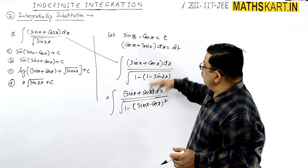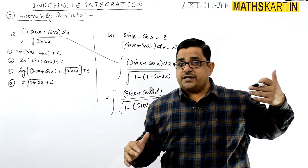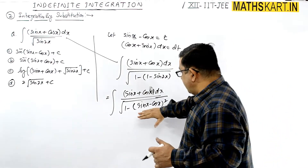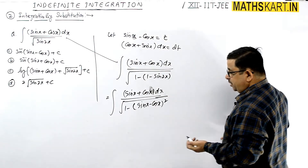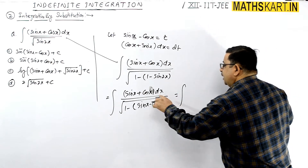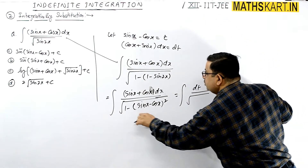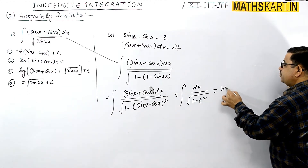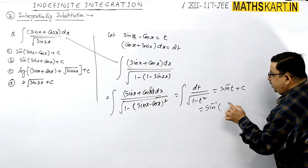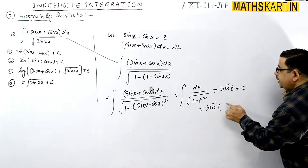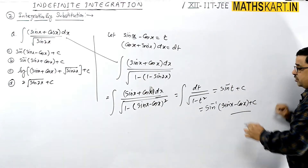We need to let t = sin x minus cos x. So sin x + cos x dx becomes dt directly. Place this value here — this portion becomes dt upon root of (1 minus t²), and then it becomes sin⁻¹(t) + C. Therefore the answer is sin⁻¹(sin x minus cos x) + C, constant of integration.